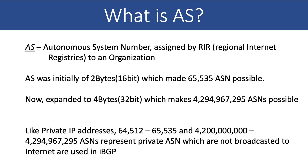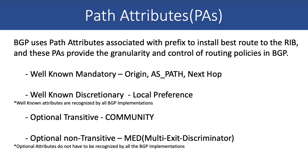Like IP addresses, AS numbers are also private — they do not get broadcasted in the public domain, that is the internet. These numbers are primarily used within the autonomous system for iBGP purposes. The private AS number range is 64512 to 65535, and the four-byte range has numbers from 4.2 billion up to 4294967295.